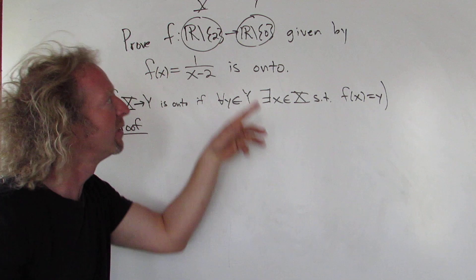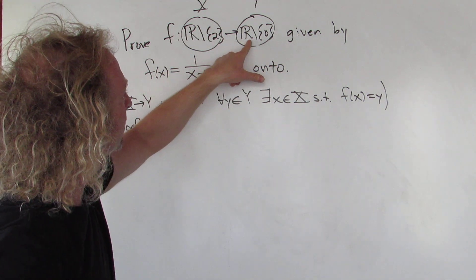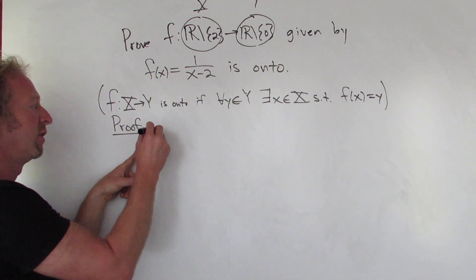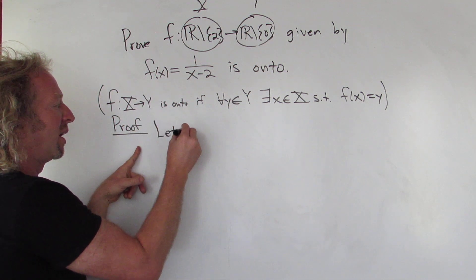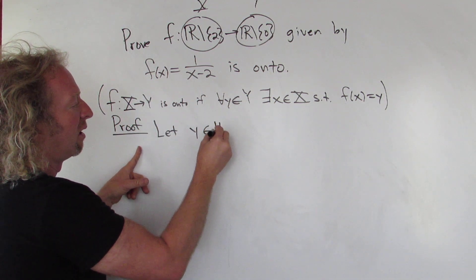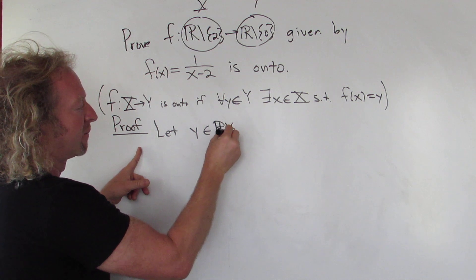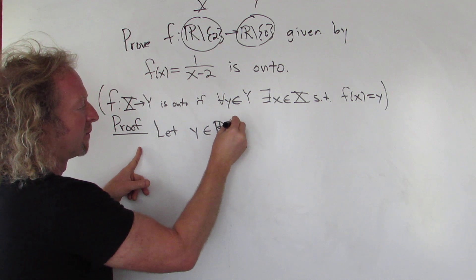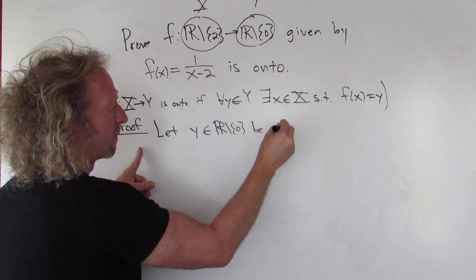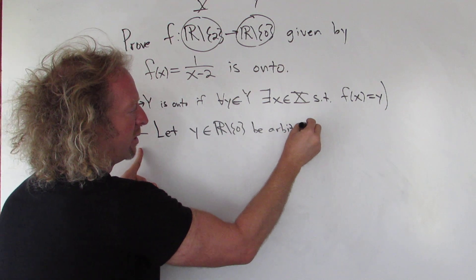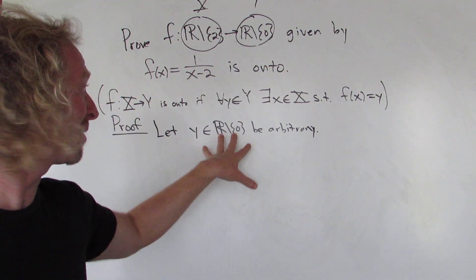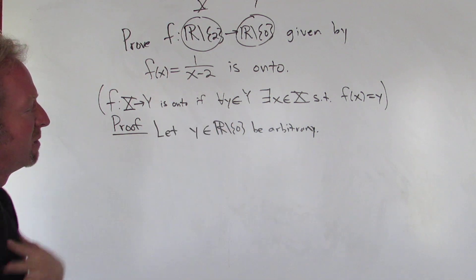That's the idea. We have to start by taking some little y, so in the proof we'll say: let little y in our set minus zero be arbitrary — or you can just say take any little y in that set. That's our capital Y, and that will satisfy this piece of the definition.